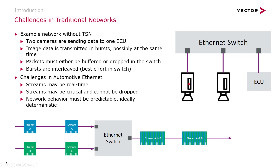On the right-hand side of the slide you can see an example network. Two cameras and an ECU are connected to an Ethernet switch. The cameras are sending data to the ECU, probably in bursts of frames at image acquisition, and possibly both cameras are transmitting at the same time — which is the worst case in this scenario, as it leads to a temporary oversubscription of the uplink. Packets must then be buffered in the switch, and potentially dropped if additional traffic mixes in and the buffer runs out.